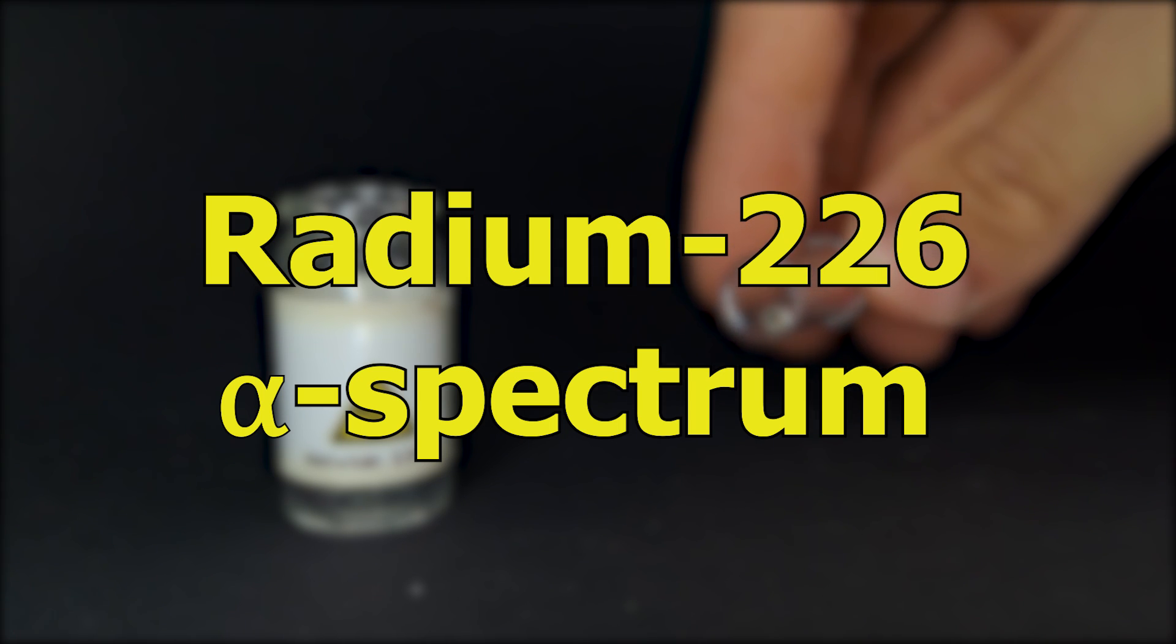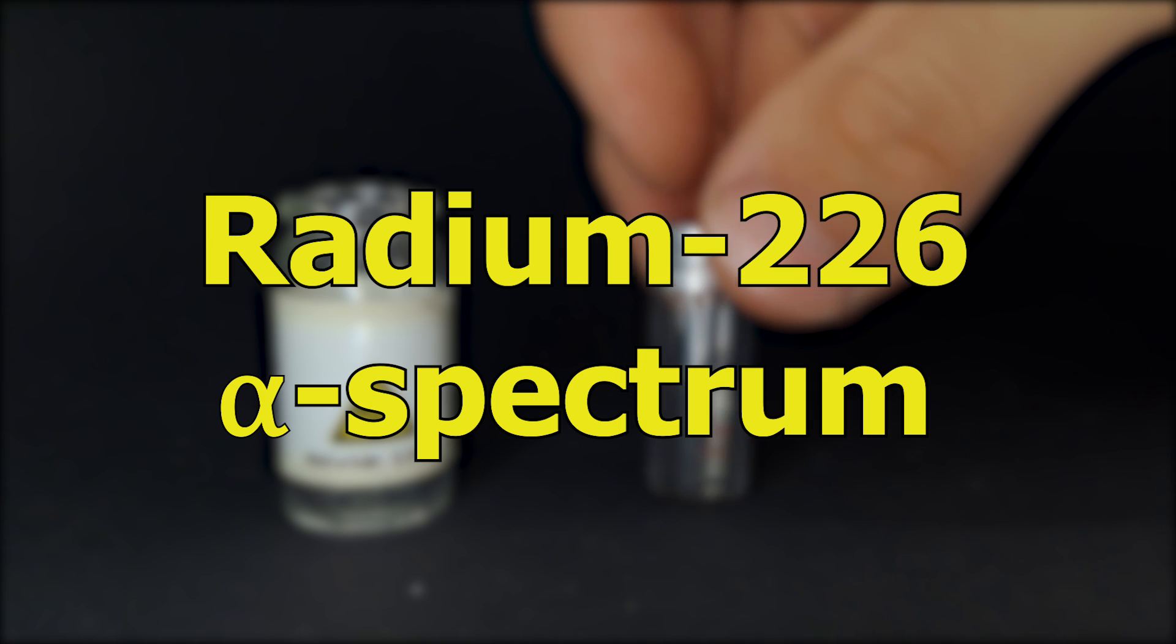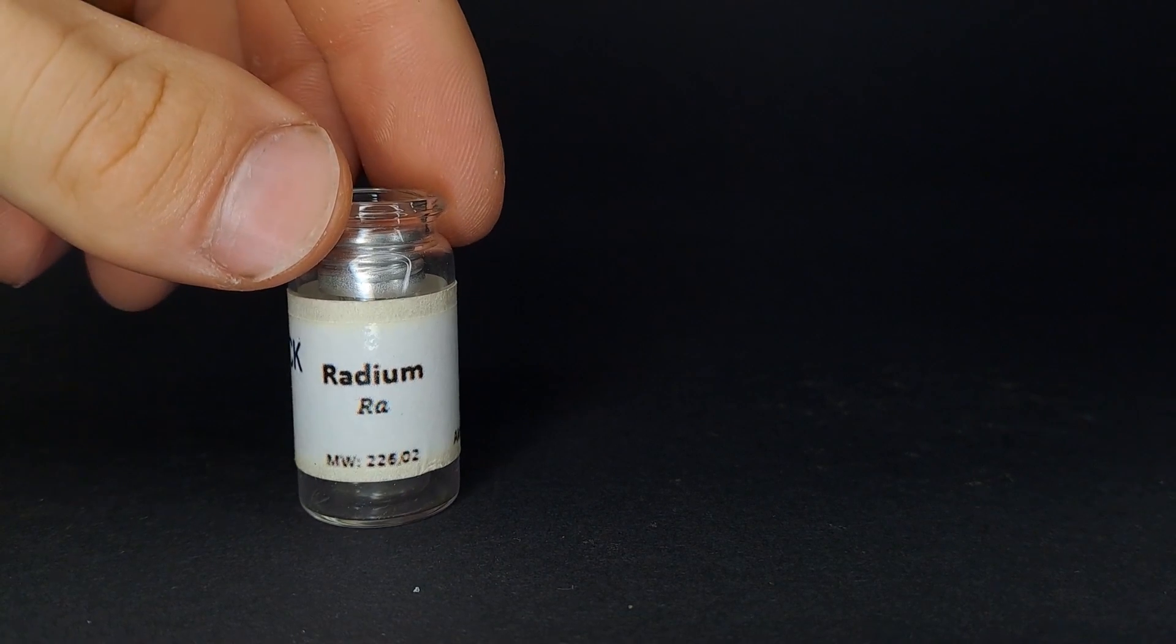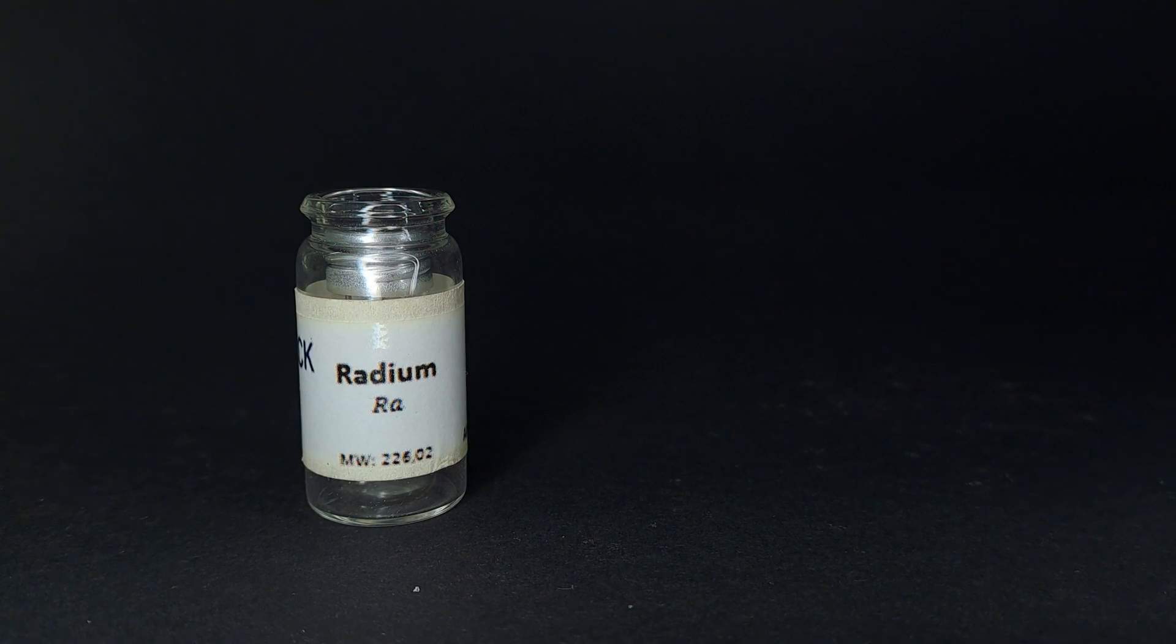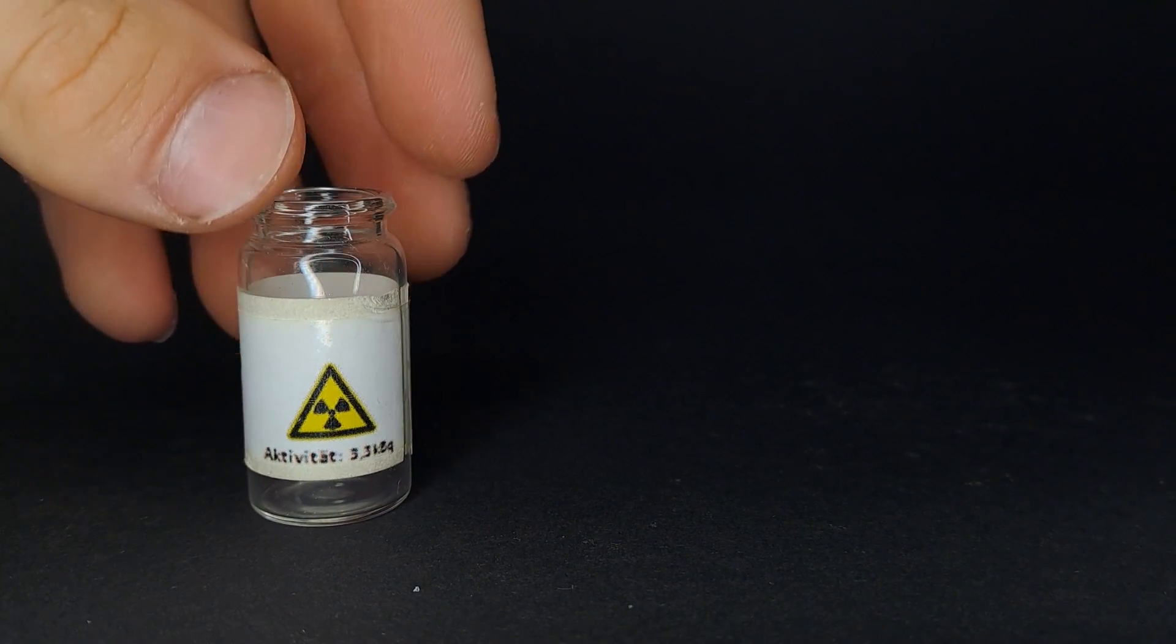I'm testing a new video series where I explain the spectra of various samples that we have in our radioactive storage. In this video, we are looking at an alpha spectrum. To do this, we will need an alpha emitting sample. In this case, it's radium-226.